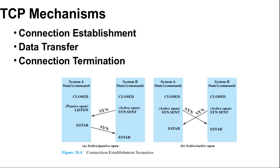A connection is uniquely determined by the source and destination sockets: host and port. Thus at any one time there can only be a single TCP connection between a unique pair of ports. However, a given port can support multiple connections, each with a different partner port.